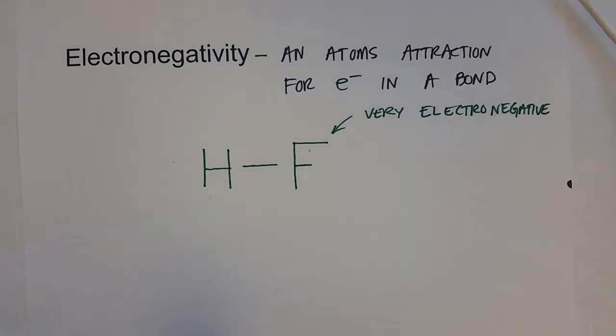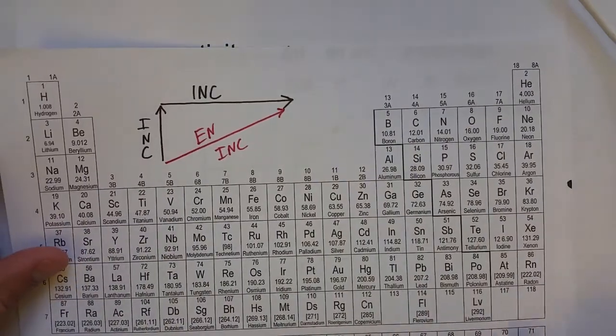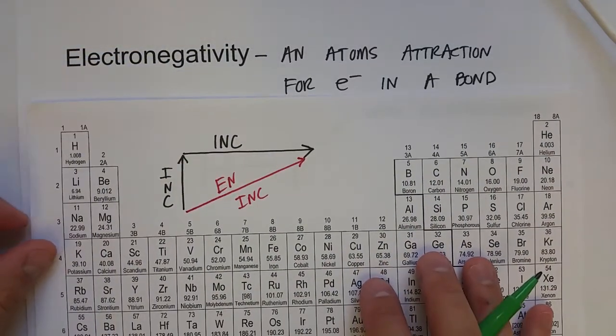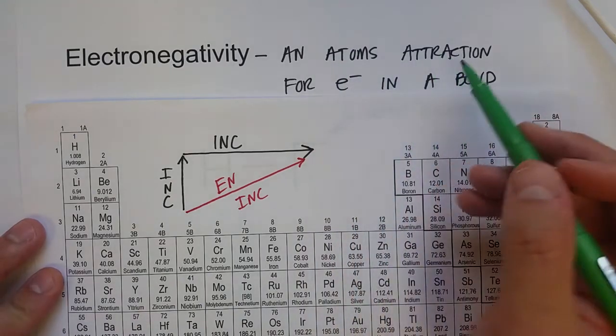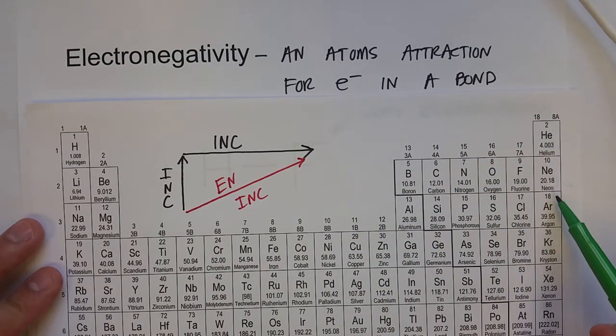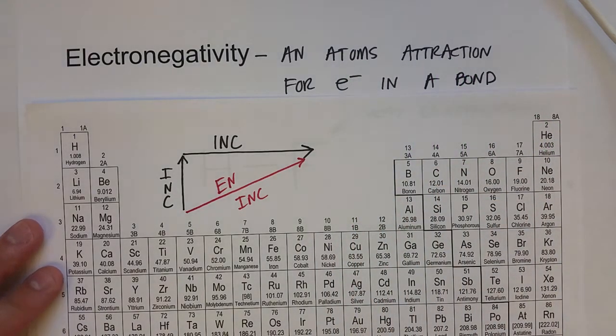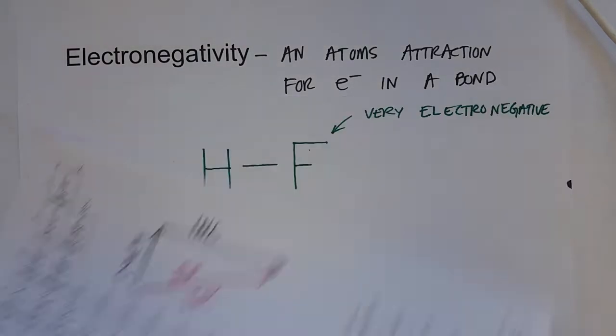Why wouldn't helium or neon have a higher electronegativity? And that, of course, is if we think about the definition of electronegativity, it's attraction for electrons in a bond. And we know that the noble gases aren't going to form bonds with other atoms because they already are very stable. So HF is very electronegative.